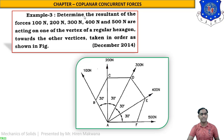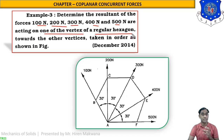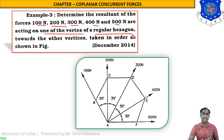What is given in example three: determine the resultant of the forces 100 N, 200 N, 300 N, 400 N, and 500 N — so total five forces are acting on one of the vertices of a regular hexagon. Now, what is a regular hexagon? What is a hexagon? What is a pentagon? What is an octagon? These are mathematical figures.